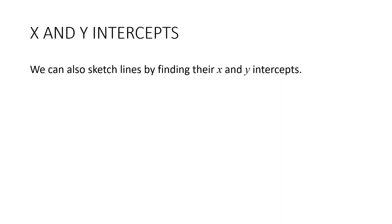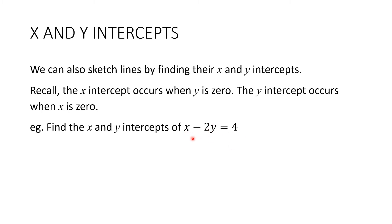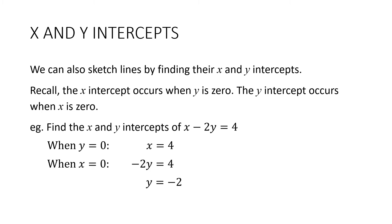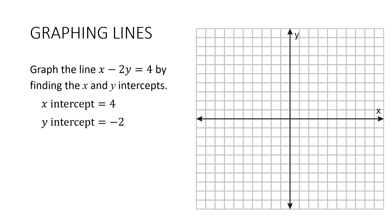We can also sketch lines by finding their x and y-intercepts. Remember that the x-intercept occurs when y is 0, and the y-intercept occurs when x is 0. This method is really suited to standard form. If we substitute 0 in for y, we get the x-intercept straight away. If we substitute 0 in for x, we only have a small one-step equation to solve to get the y-intercept. So when y is 0, x is 4, and when x is 0, negative 2y equals 4. Plot the x-intercept and y-intercept, draw in the line, and make sure you label it.